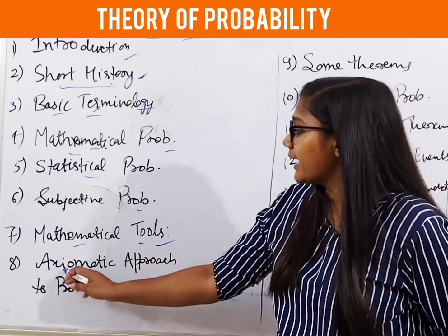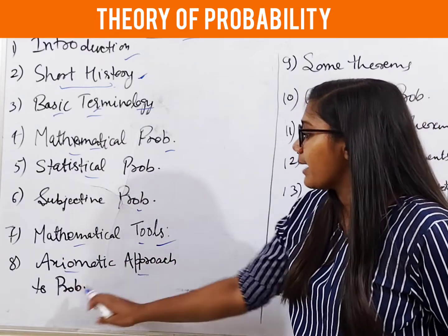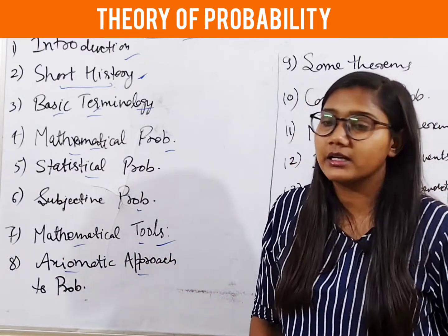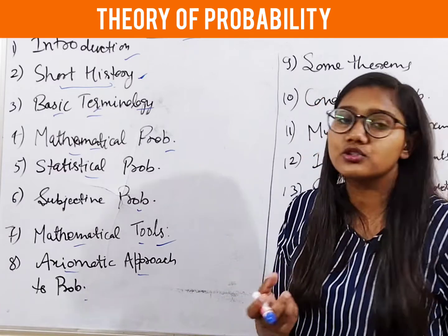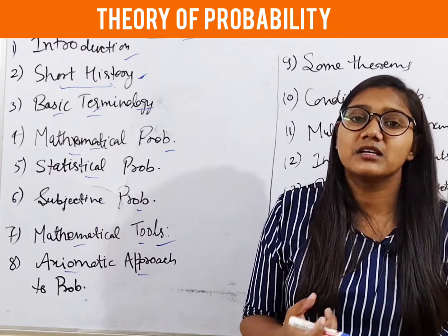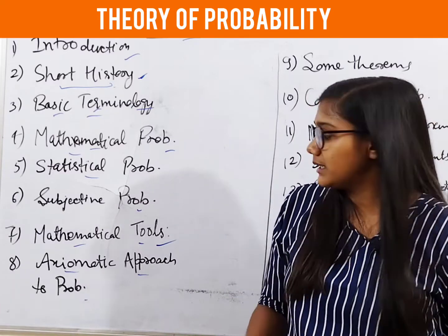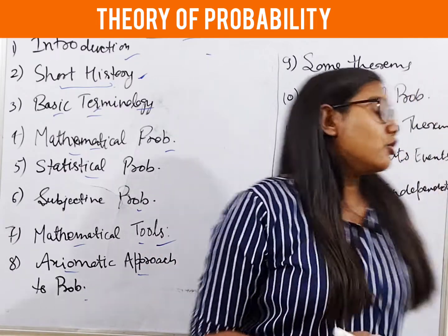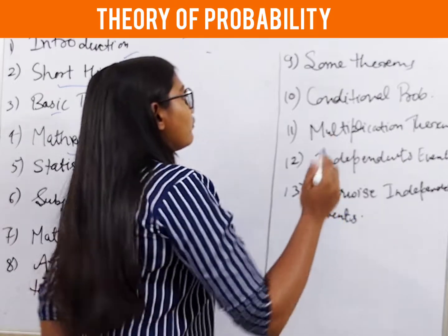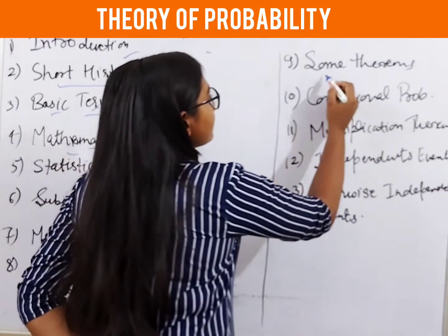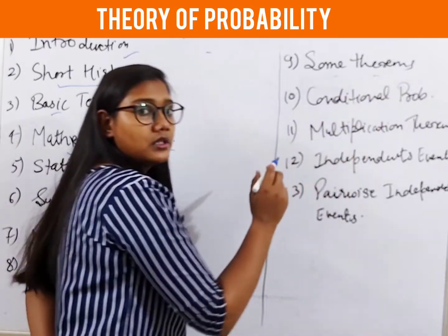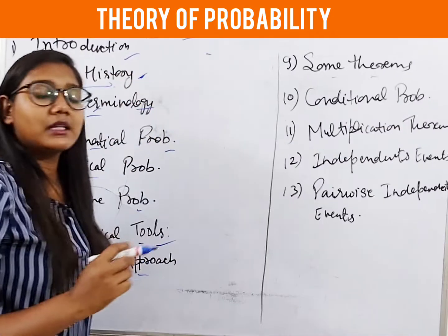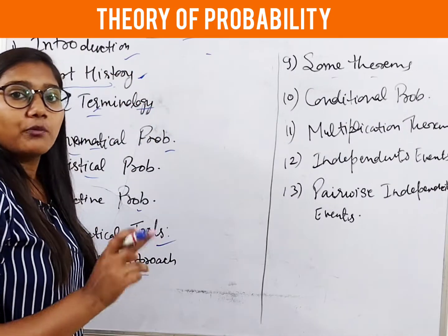Next is the Axiomatic Approach to Probability — this is a different approach for probability. After that, we will study some theorems on probability.